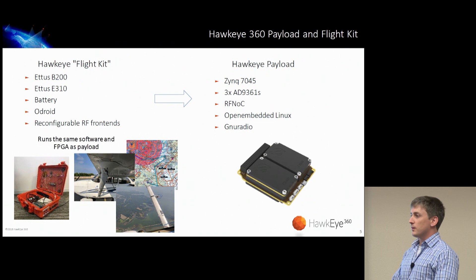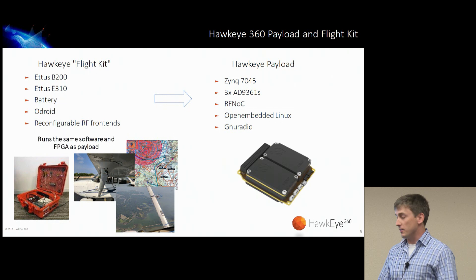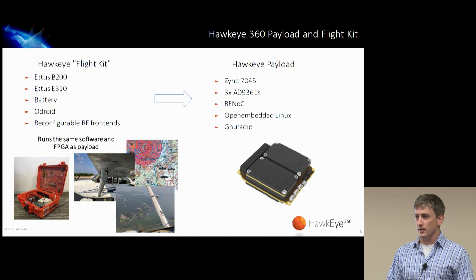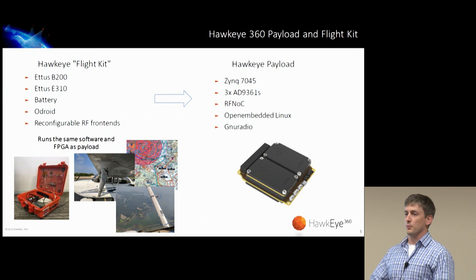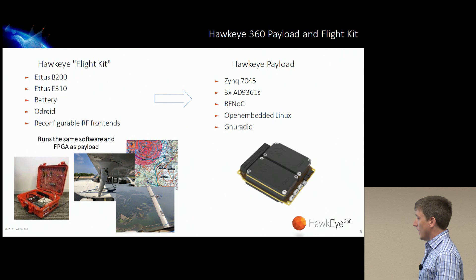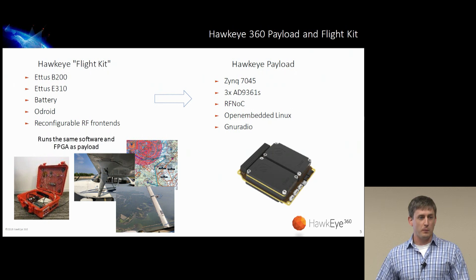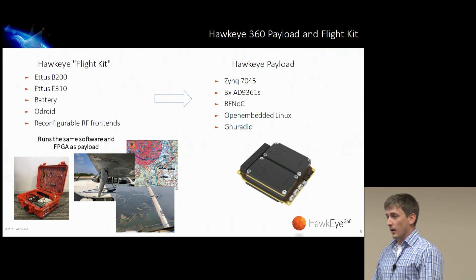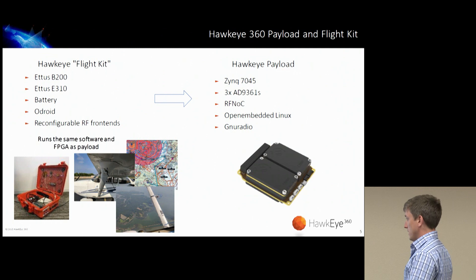We went from nothing to a flight demonstration within 12 months, and did several flights past that. This was our first integration of hardware and software as a company — the Hawkeye flight kit. We've got a B200 and an E310 in a box, with embedded code running on the E310, and a computer hooked up to the B200 for wider bandwidth captures. We do some real-time processing on the E310 ARM, some recording and post-processing on the B200. We attached it to three airplanes, flew around the Chesapeake Bay, and recorded maritime signals including AIS, EPIRB, radar, VHF, and Iridium.